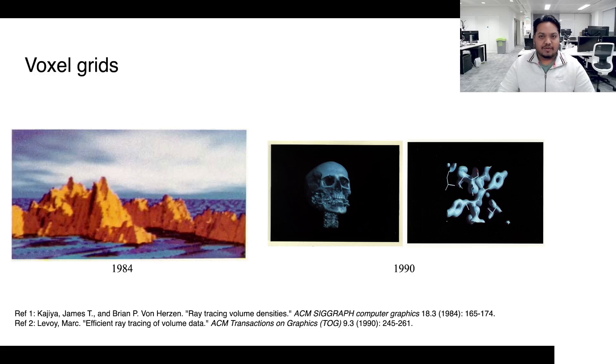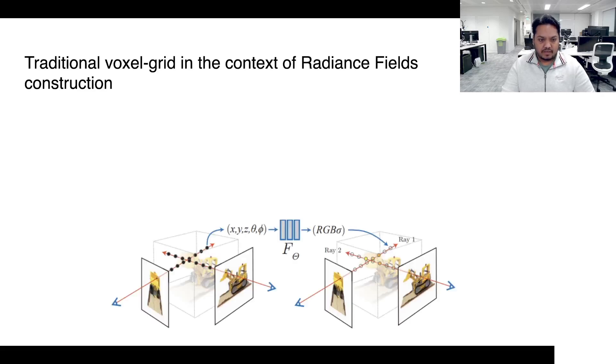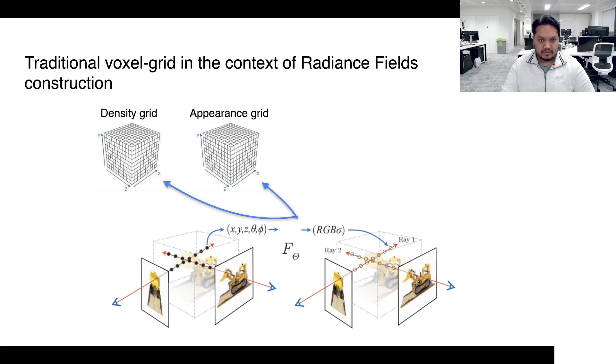But now we ask the question, why is that the case? And in this work, we investigate the root cause of this jump in result quality by starting with traditional voxel grids and trying to see what has to be added to get to the quality level of NeRFs. To put traditional voxel grids in the context of NeRFs, one can simply visualize that instead of the MLP, the 3D scene is being represented by two dense voxel grids, one representing the volumetric density and the other representing the appearance.